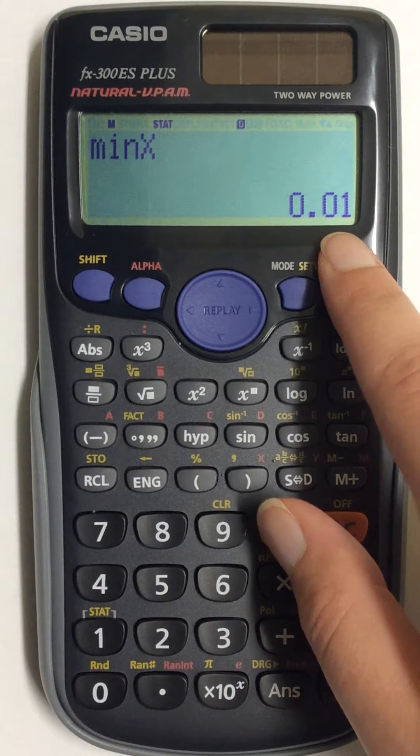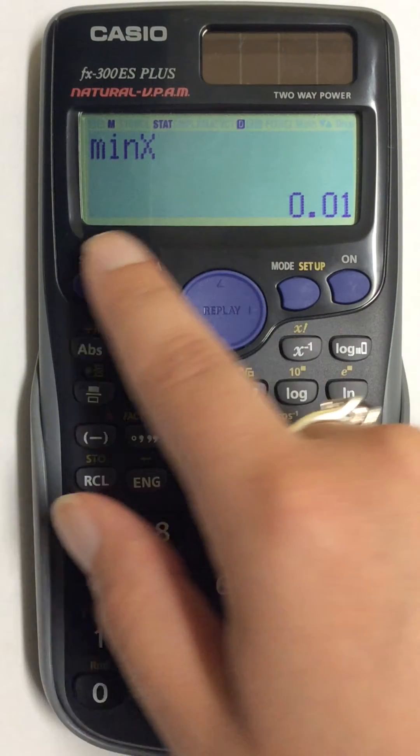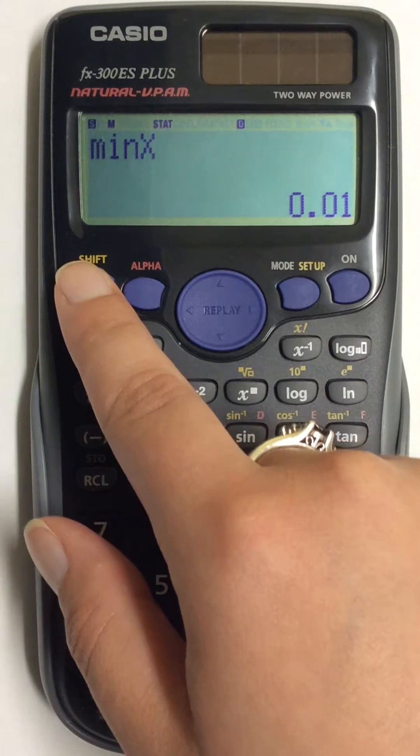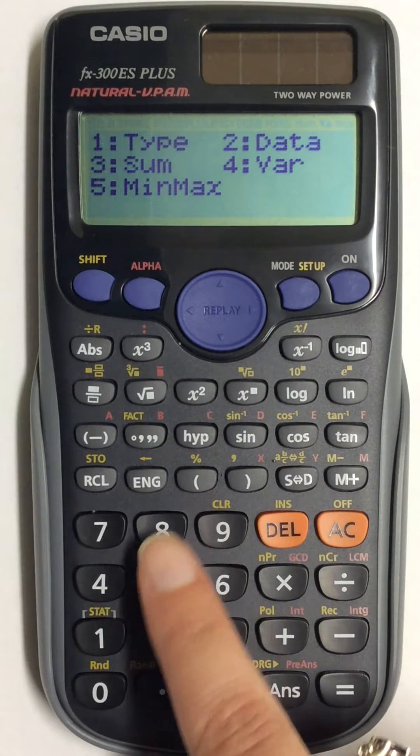To get back to your options to find the other numbers for your five-number summary, go back to Shift and 1, and go back to number 5.